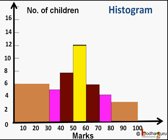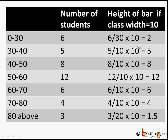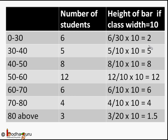So how to solve it? To get a proper histogram, we need to find what would have happened if all the class sizes were the same. For example, for the 0 to 30 class, when the class size is 30, its height is 6 — that is 6 students. So when the class size becomes 10, like the rest of the other classes, its height will become 6 divided by 30, into 10, which is equal to 2.